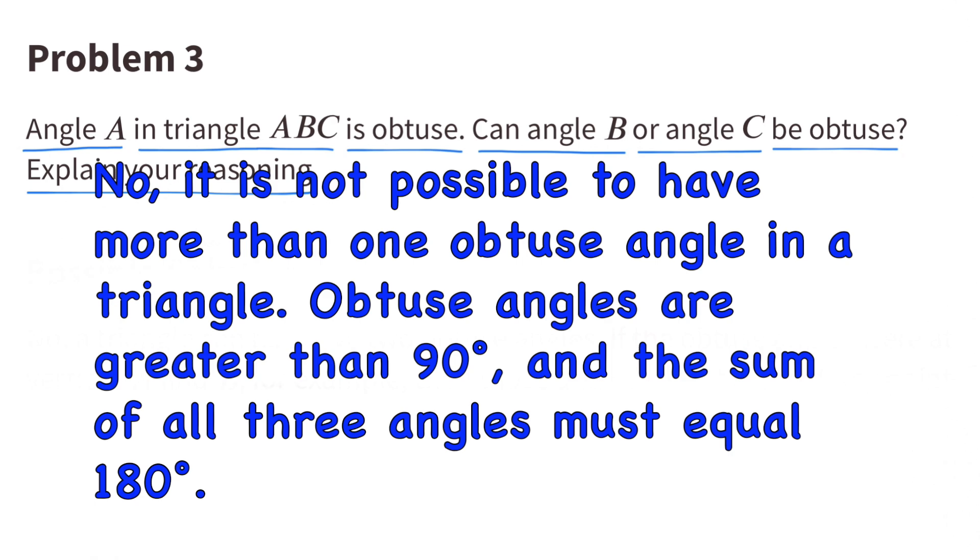No. It is not possible to have more than one obtuse angle in a triangle. Obtuse angles are greater than 90 degrees, and the sum of all three angles must equal 180 degrees.